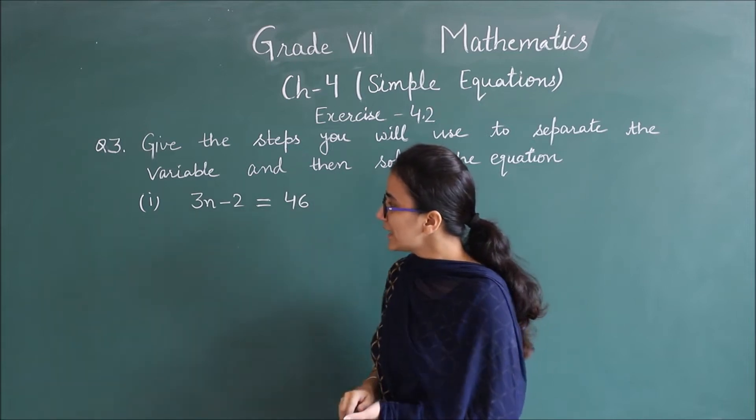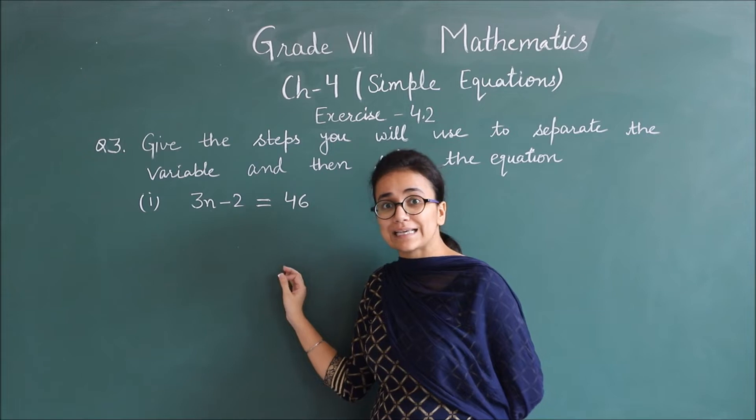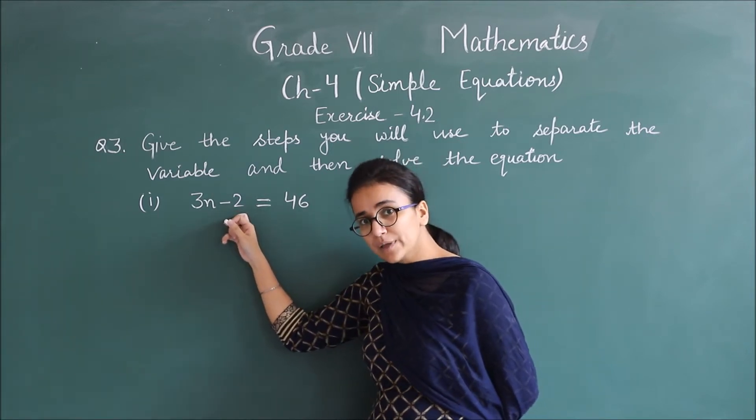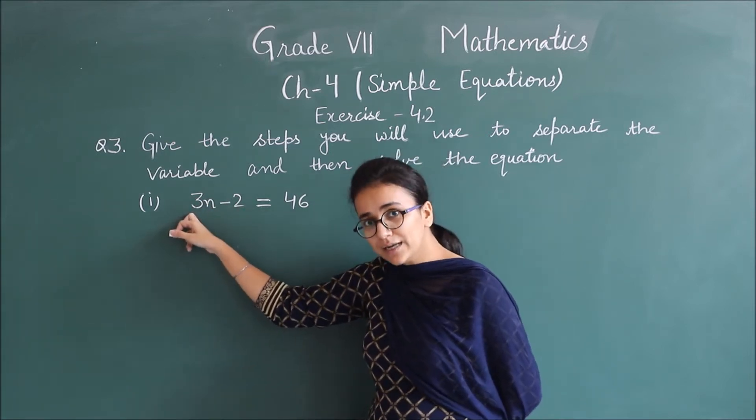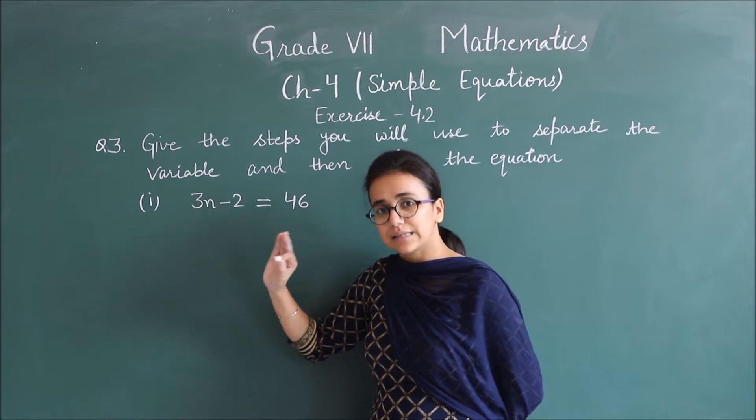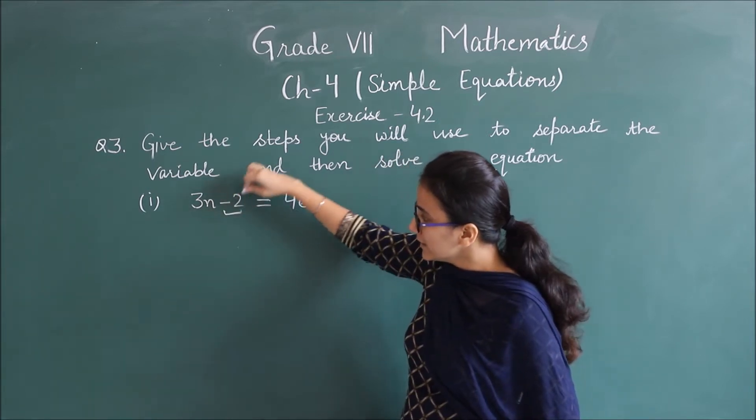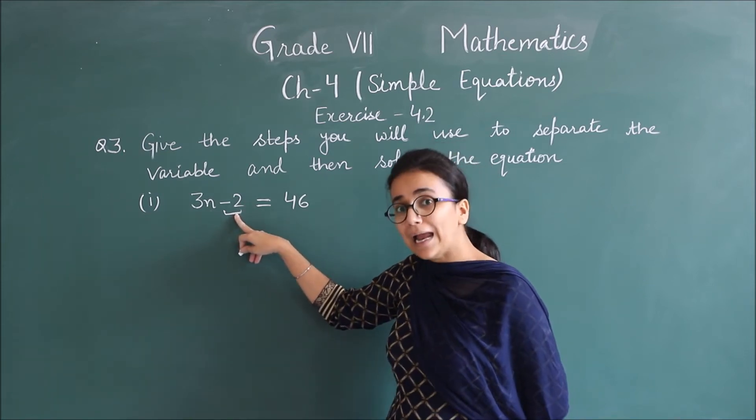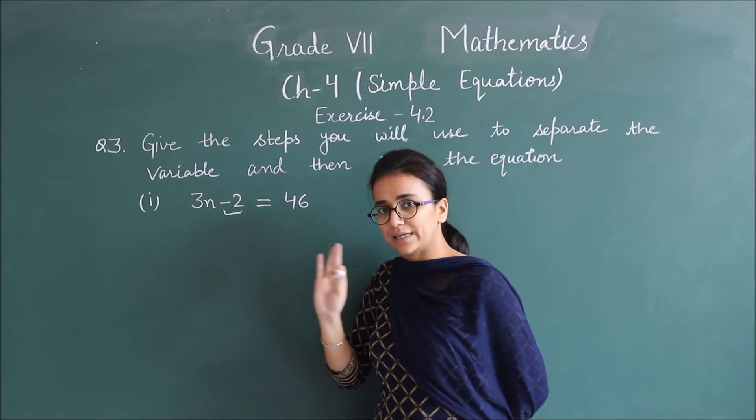Look, first part given is 3n minus 2 equals 46. Now see, minus 2 is there, so we need to remove it to separate the variable. And with n, 3 is also multiplied, so we need to remove that too. Clear? So first, look, minus 2 is there. To remove this minus 2, what do we need to do? Add 2 on both sides so that minus 2 cancels out. Clear?